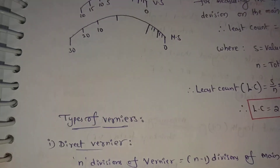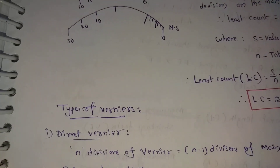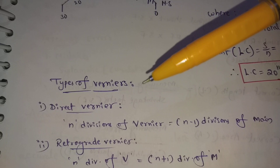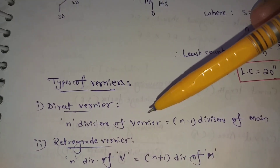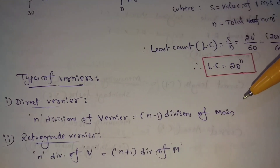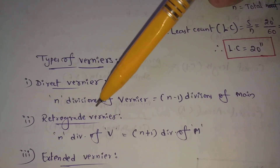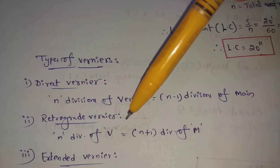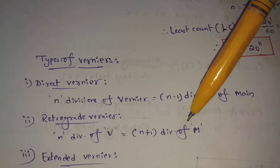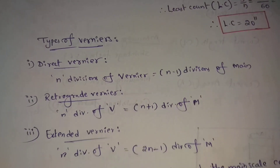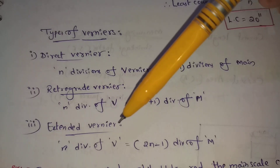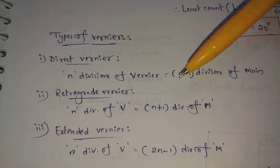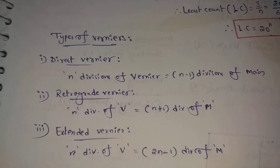There are three types of Vernier scale. First, direct Vernier: N divisions of Vernier equal N minus 1 divisions of the main scale. Second, retrograde Vernier: N divisions of Vernier equal N plus 1 divisions of the main scale. Third, extended Vernier: N divisions of Vernier equal (2N minus 1) divisions of the main scale.